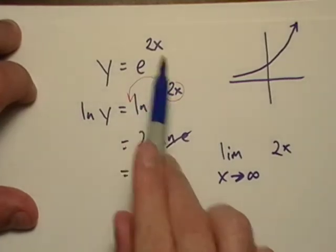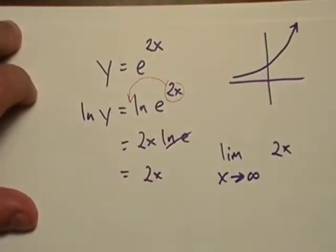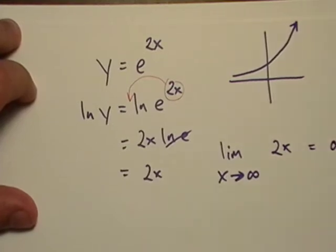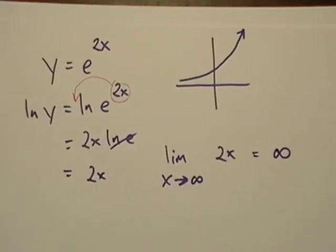Because, like I said, this 2X is the only thing that's affecting this function. And that, of course, tends to go to infinity. Did I get it on? Nope. So there it is now.